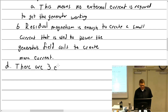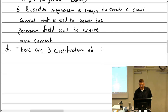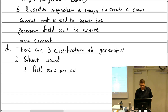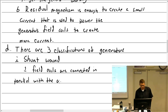There are three classifications of generators. First: shunt wound — also known as parallel — where the field coils are connected in parallel with the armature and in parallel with the load.